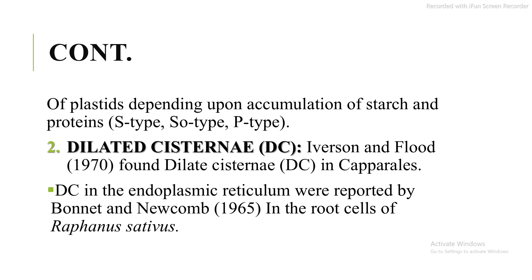S-type plastids are sieve tube elements that accumulate starch. They are found in more than 65 percent of angiosperms, including members of the Caryophyllidae. O-type plastids are sieve tube elements that accumulate neither starch nor protein; they are found in members of the Apiaceae. P-type plastids are sieve tube elements that accumulate proteins; they are found in members of the Pinaceae such as gymnosperms, and in about 21 families of monocots and some dicots like Vitaceae and Magnoliidae. P-type plastids are differentiated on the basis of the shape of crystalloids, number, and nature of filaments surrounding them.